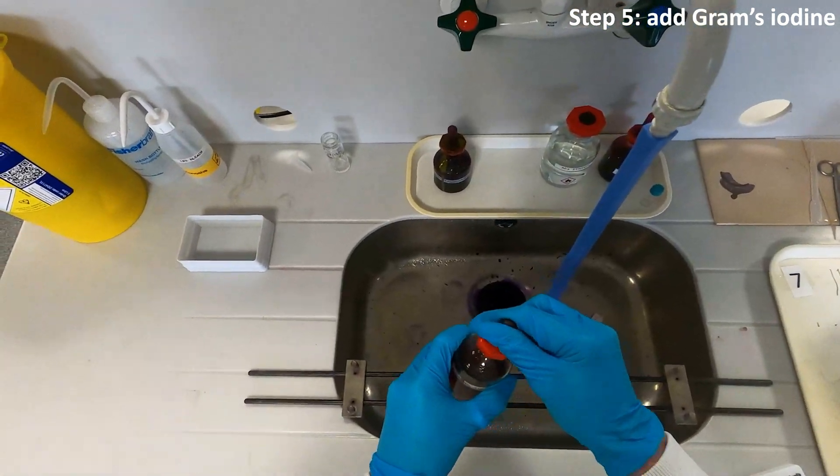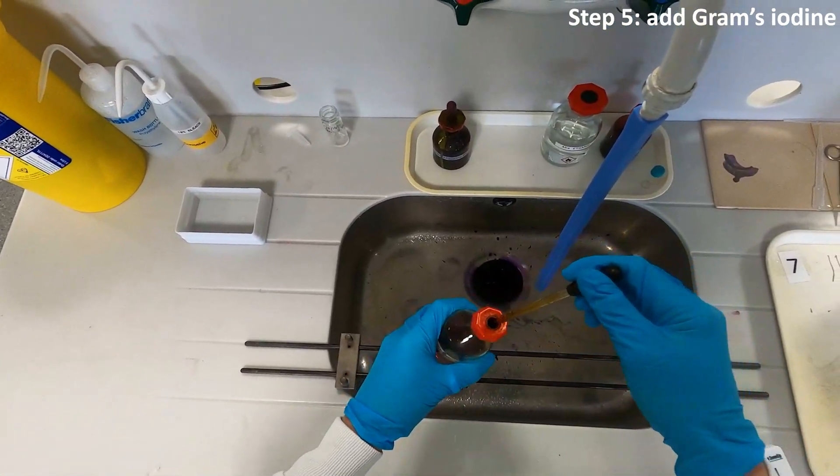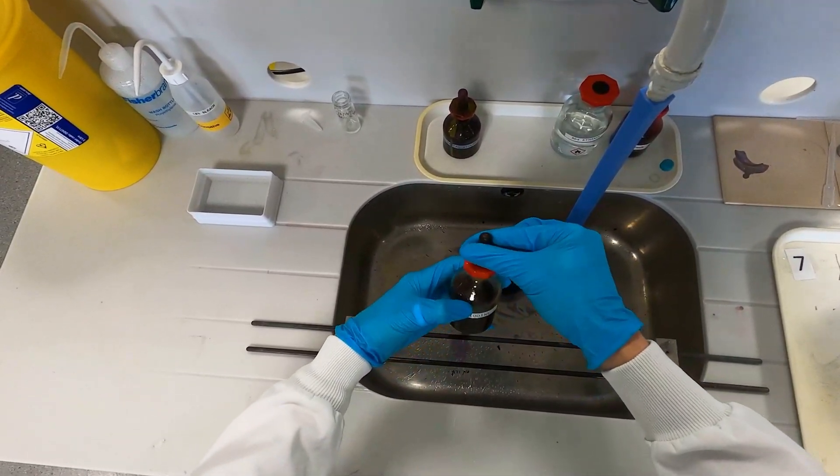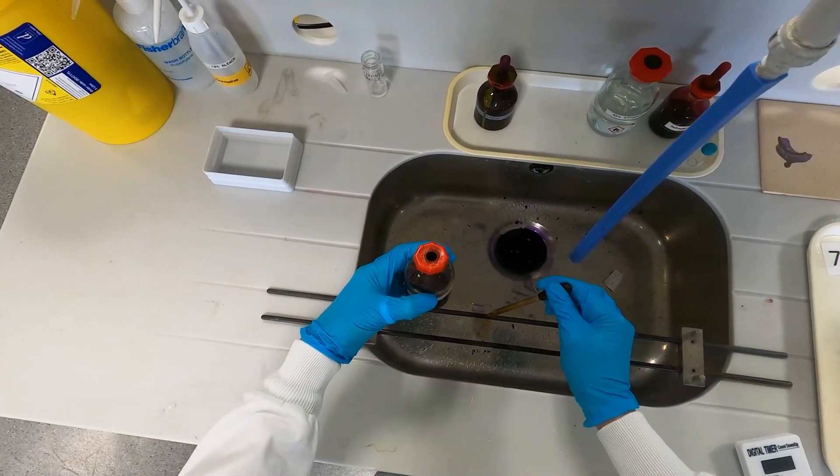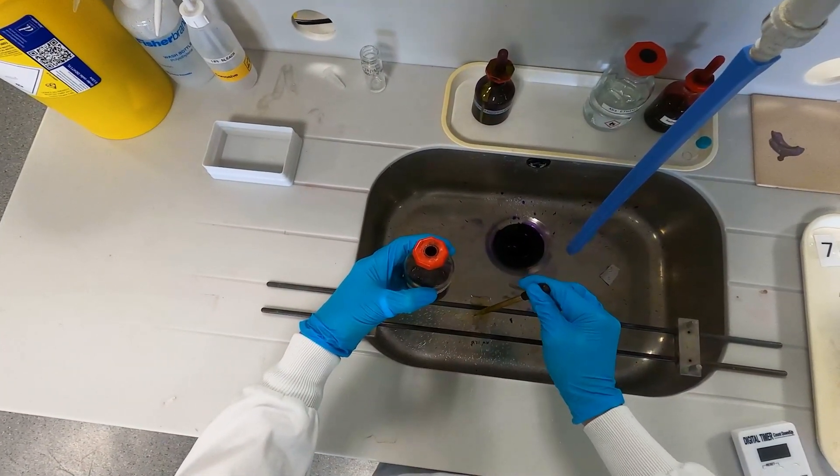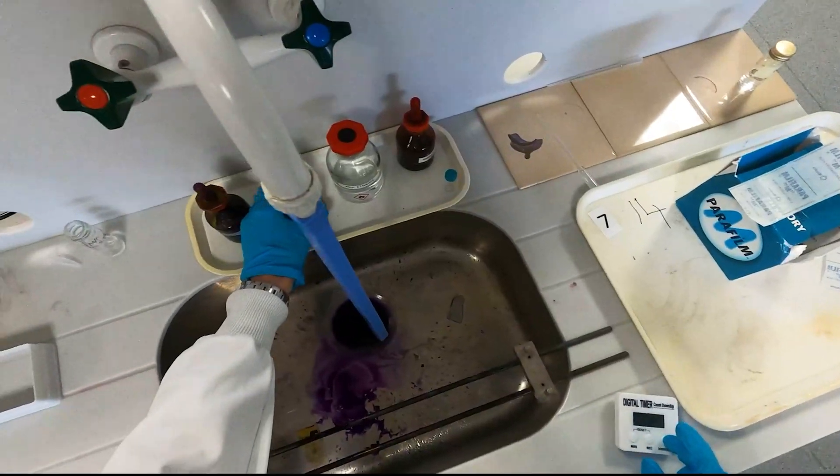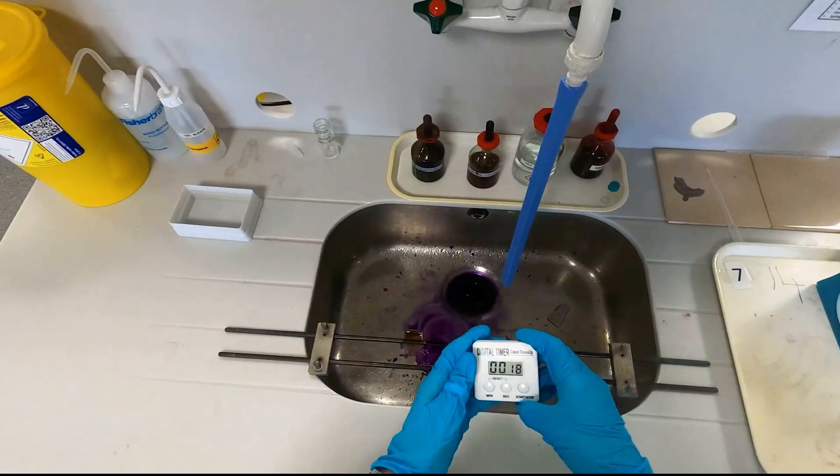Next add a few drops of Gram's iodine. This is your mordant, which binds to the crystal violet molecules and traps them within the cells. Wait another 30 seconds and then rinse under running water to get rid of any excess iodine that still remains.